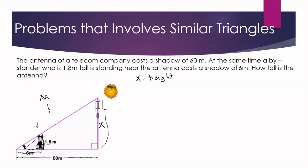Since the triangles are similar, we can use the ratio of corresponding sides to find the unknown. Since our unknown is X, we start with X. The corresponding side of X is this side (the bystander's height), so we have X over 1.8. The ratio of those two sides is equal to the ratio of another pair of corresponding sides. Since X comes from the bigger triangle, we use the shadow of the bigger triangle first, which is 60, over the corresponding side, which is 6.